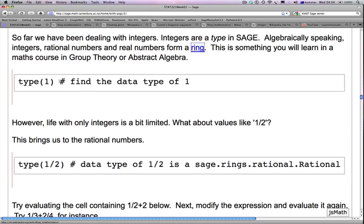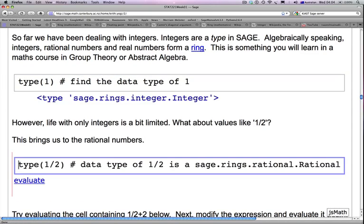First, let's find the data type of 1. So you ask what is the type of 1 by evaluating this expression, and it tells you the type is SAGE, RINGS, INTEGER, INTEGER.